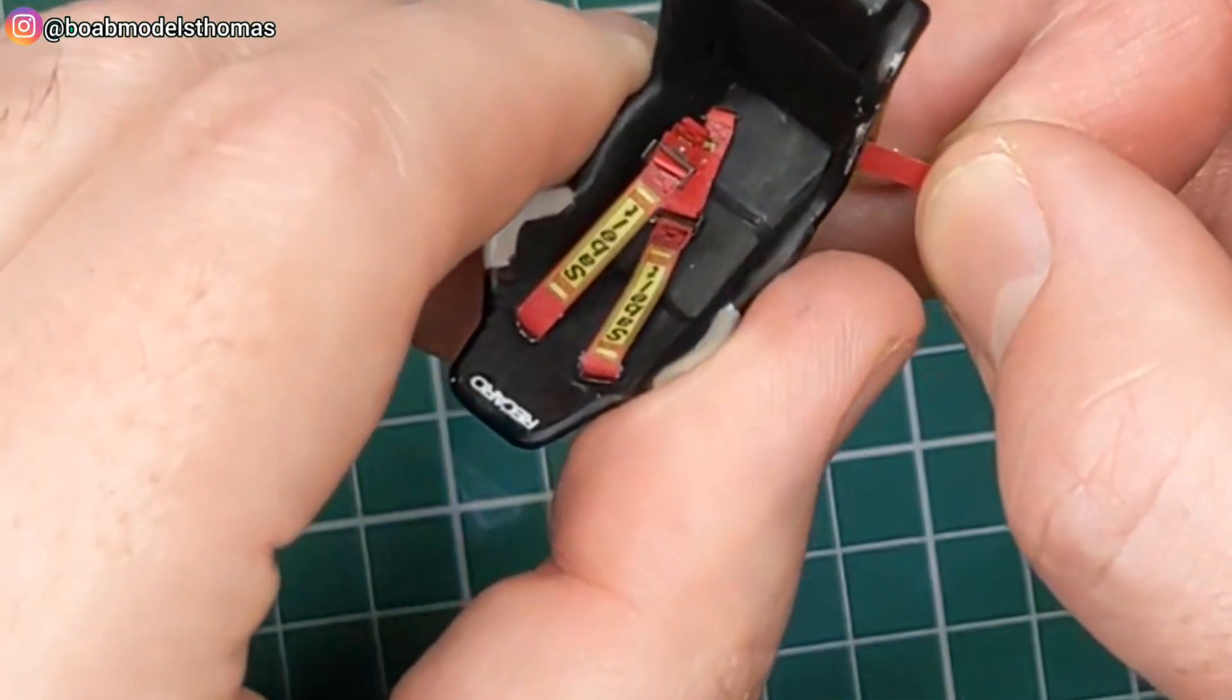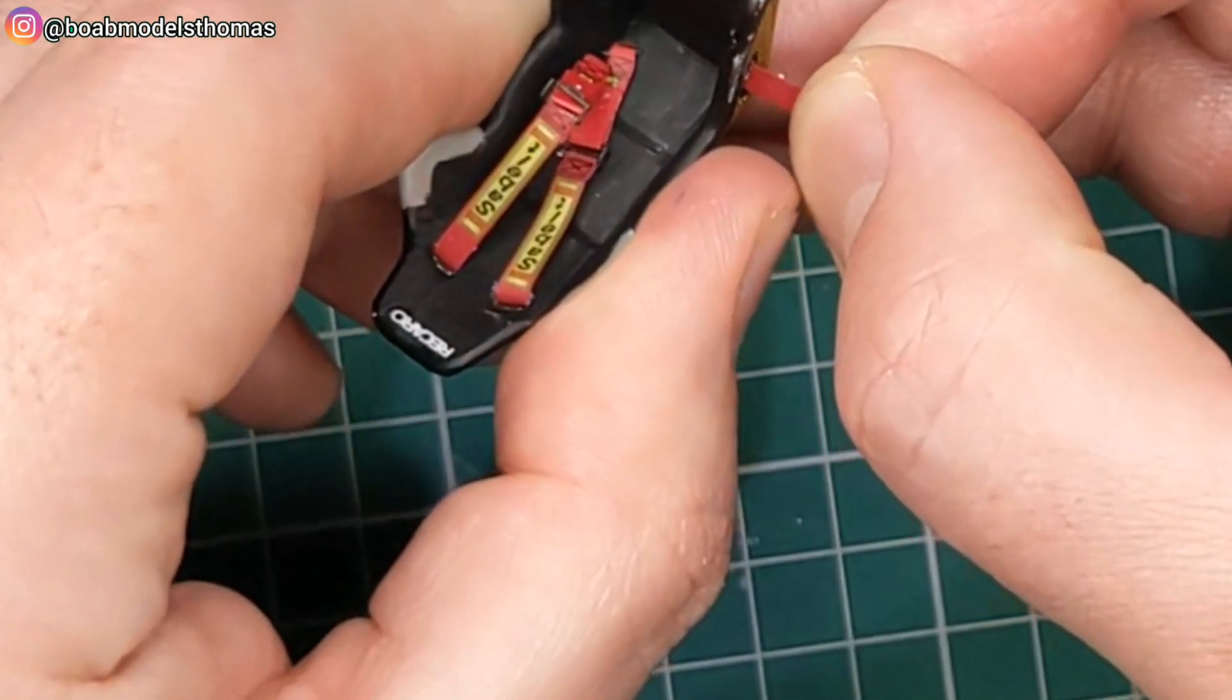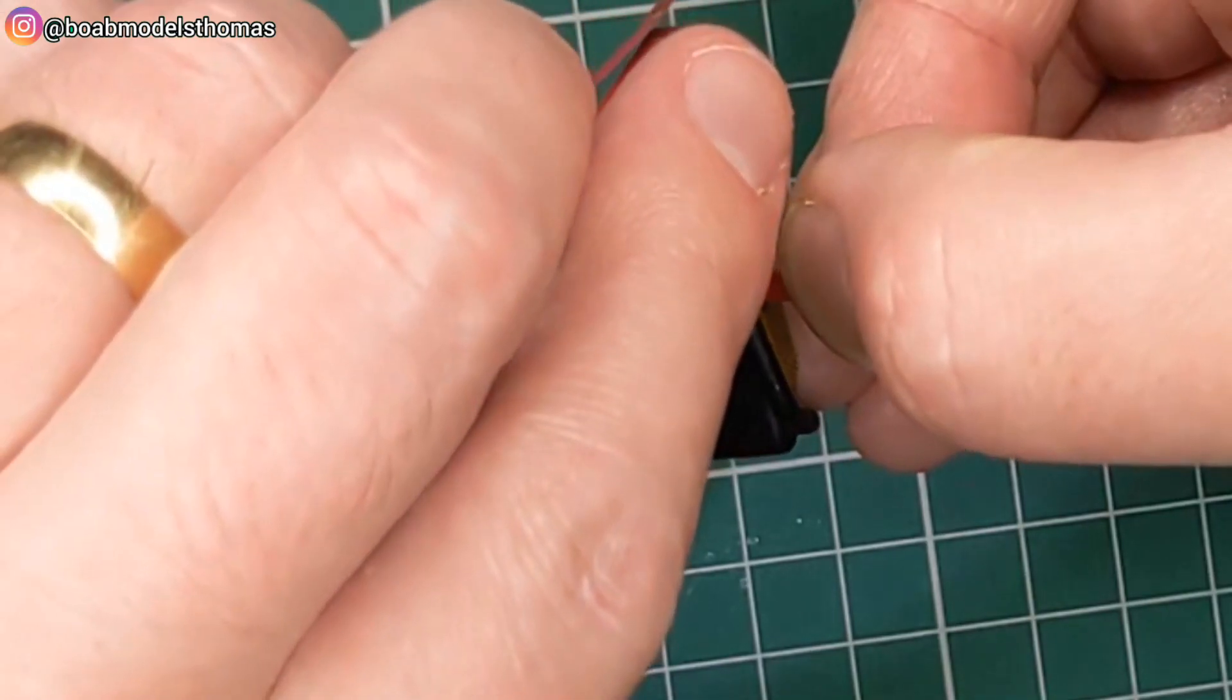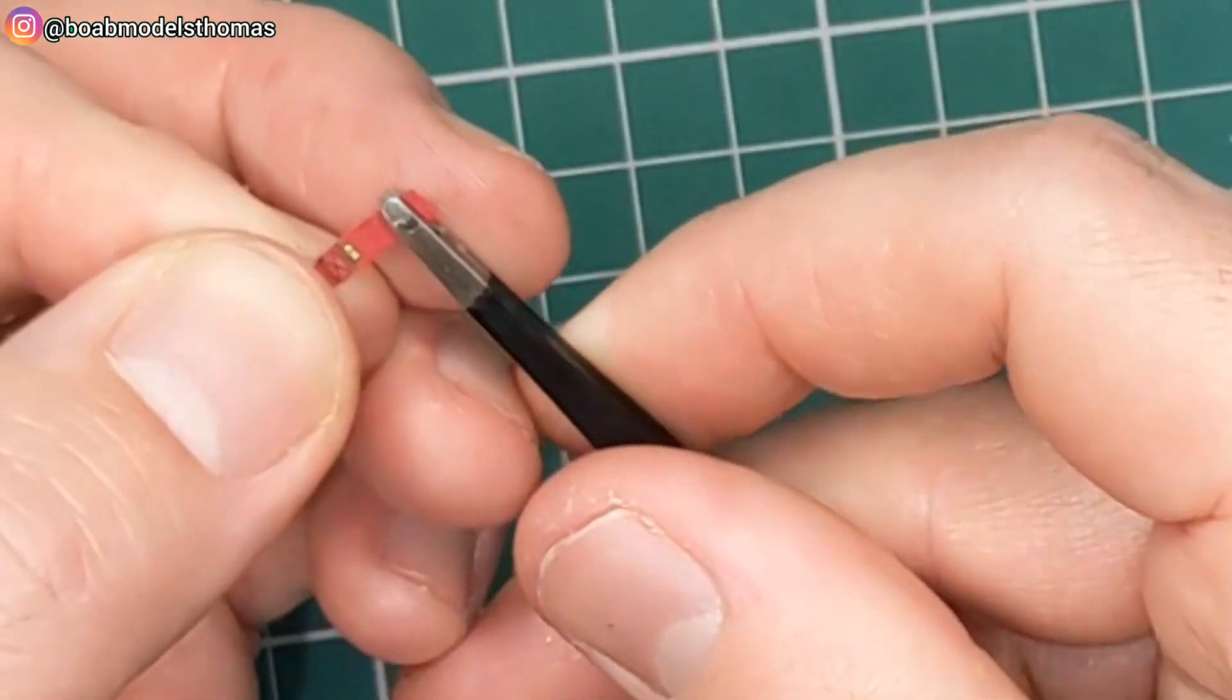So then time for the lap belts. Just like before test fit them to make sure that they fit. Here I haven't made the holes wide enough so a craft blade is quite useful just to widen that up.